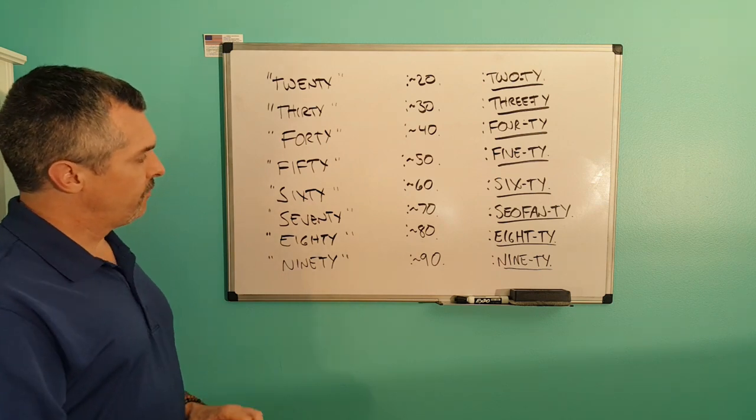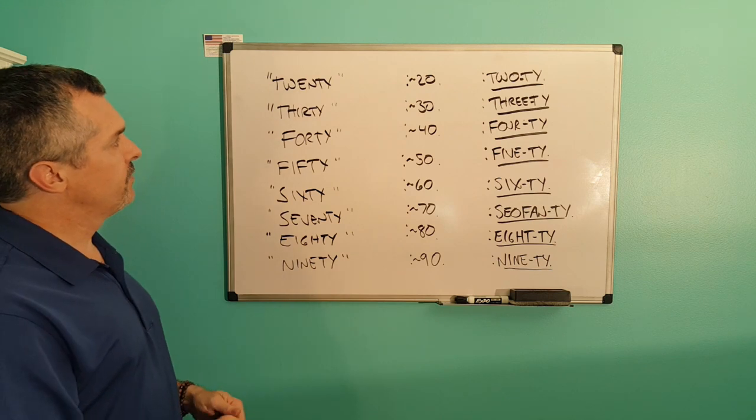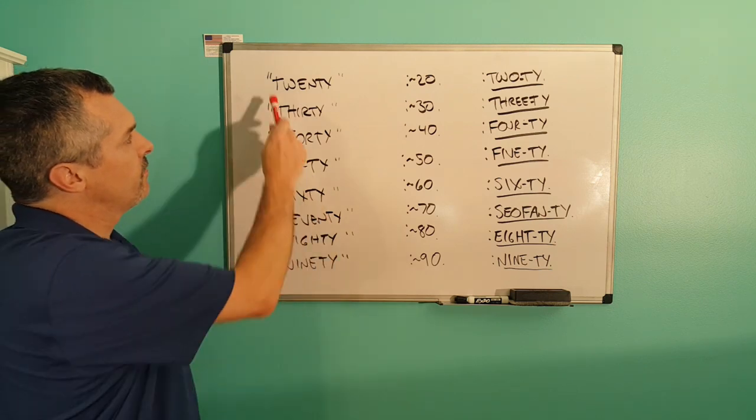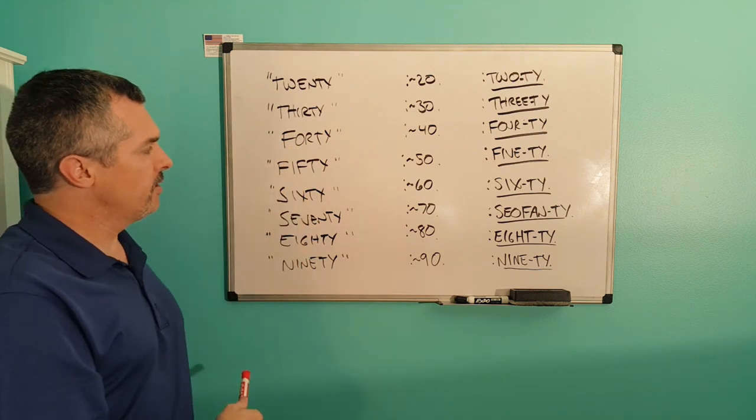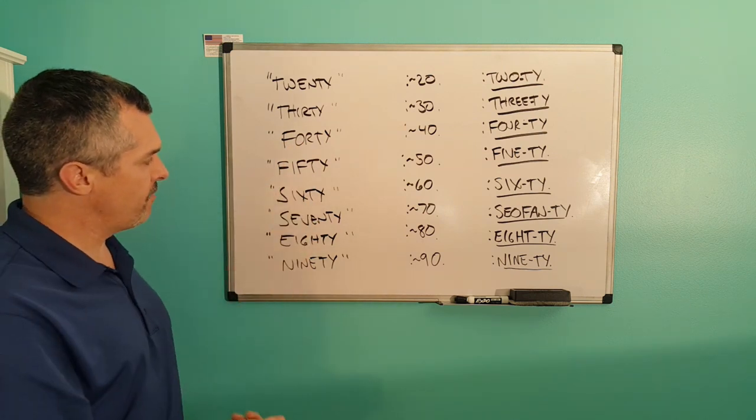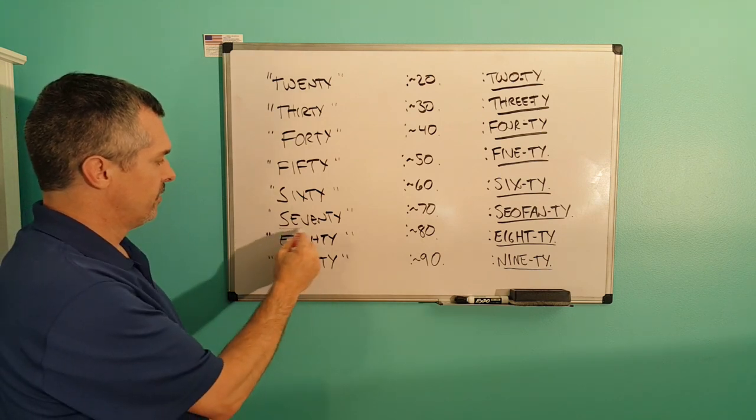20, 30, 40, 50, 60, 70, 80, 90. We have the same problems in there. We have TWAT. We have FIR. We have FOR. We have FIF. And of course, we have that.